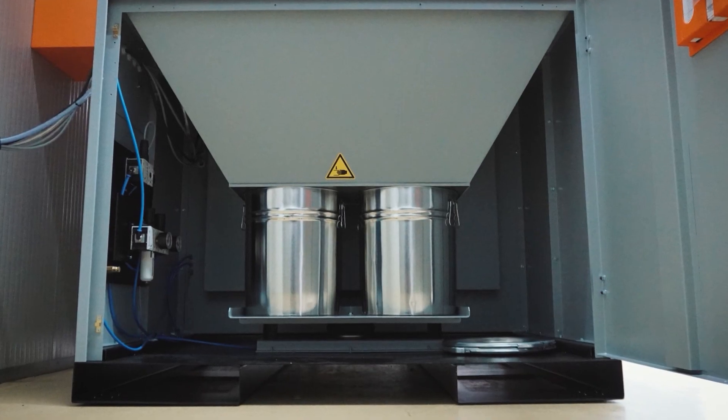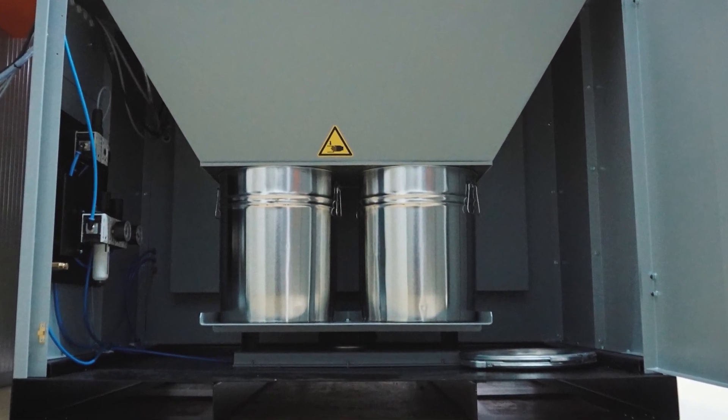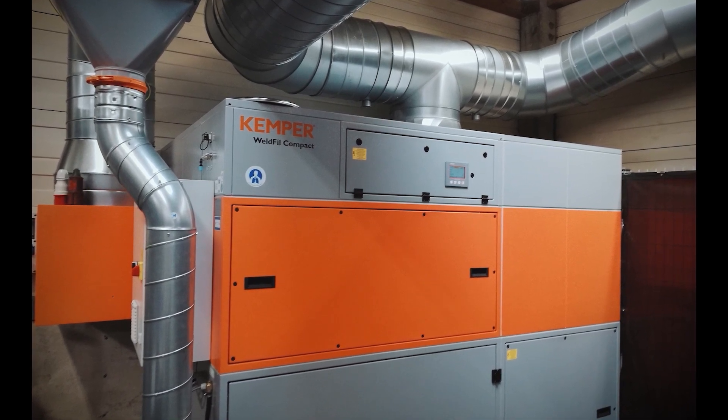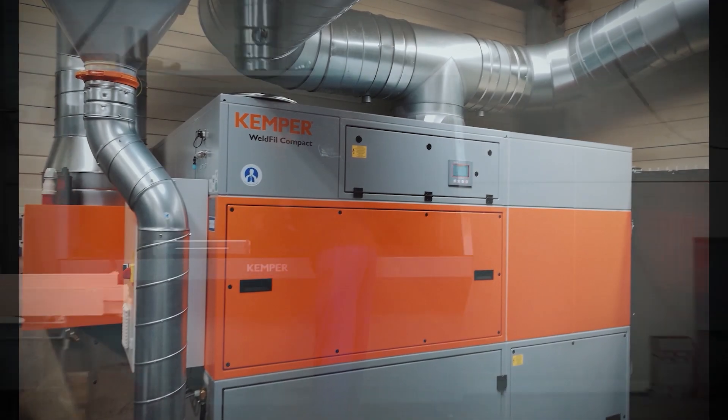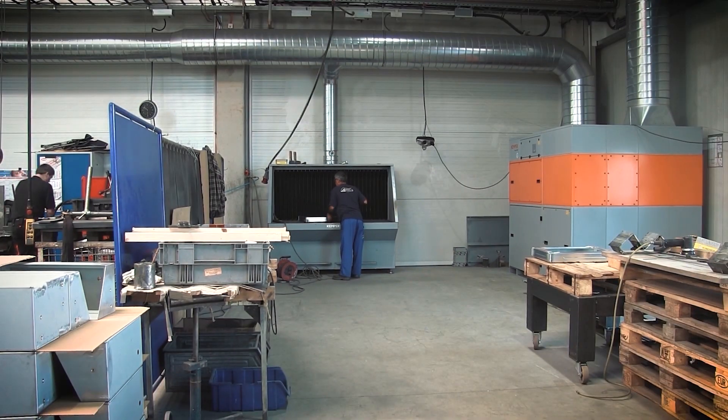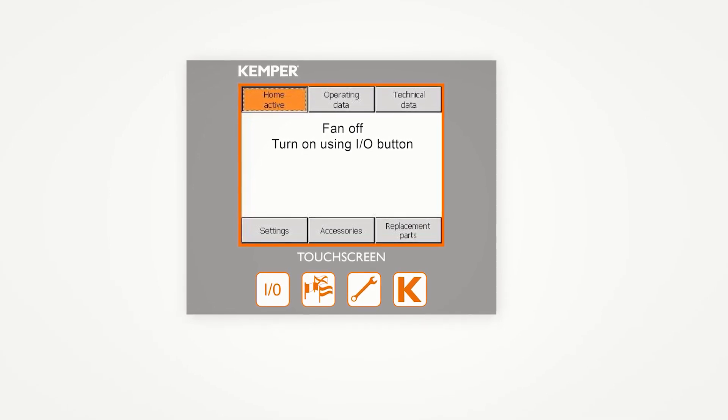The separated dust falls into a large dust collection container that is securely locked by a special compressed air lifting device. The system can be operated in either exhaust to atmosphere or recirculation mode. All settings can be made intuitively via a touch display.